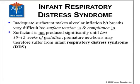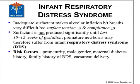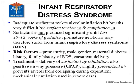Surfactant is not generated significantly until the last 10 to 12 weeks of gestation, and premature newborns suffer from infant respiratory distress syndrome. Risk factors include prematurity, male gender, maternal diabetes history, a family history of RDS, and cesarean delivery. The treatment is the delivery of surfactant by inhalation. It's also recommended that we use positive airway pressure, or a CPAP device, that prevents the alveoli from collapsing during expiration. In addition, mechanical ventilation — a respirator — is used in extreme cases.